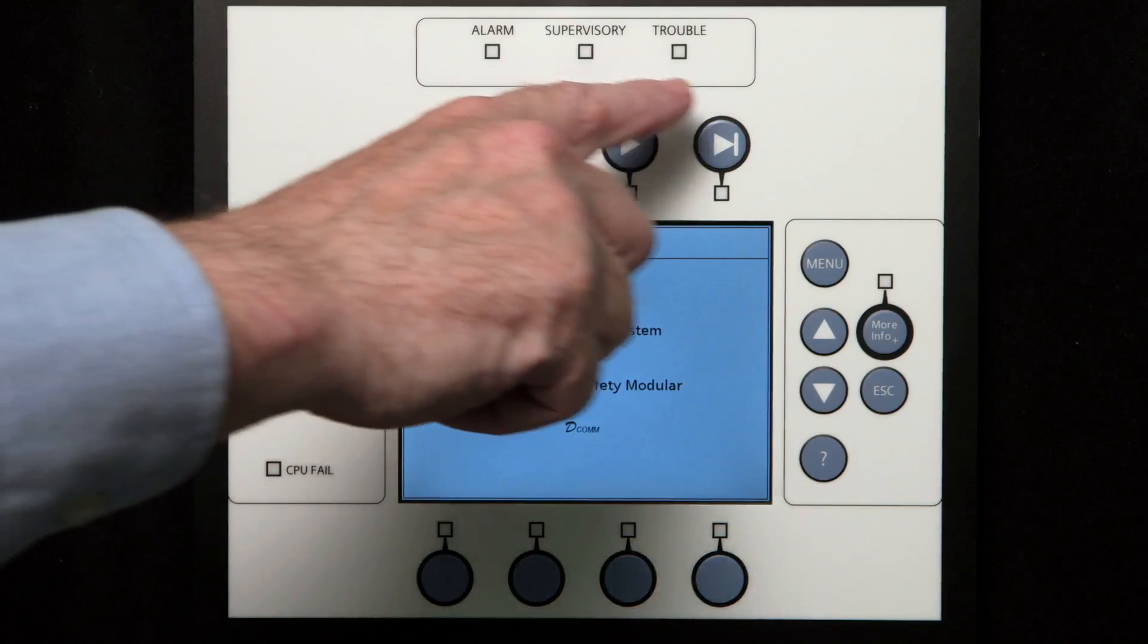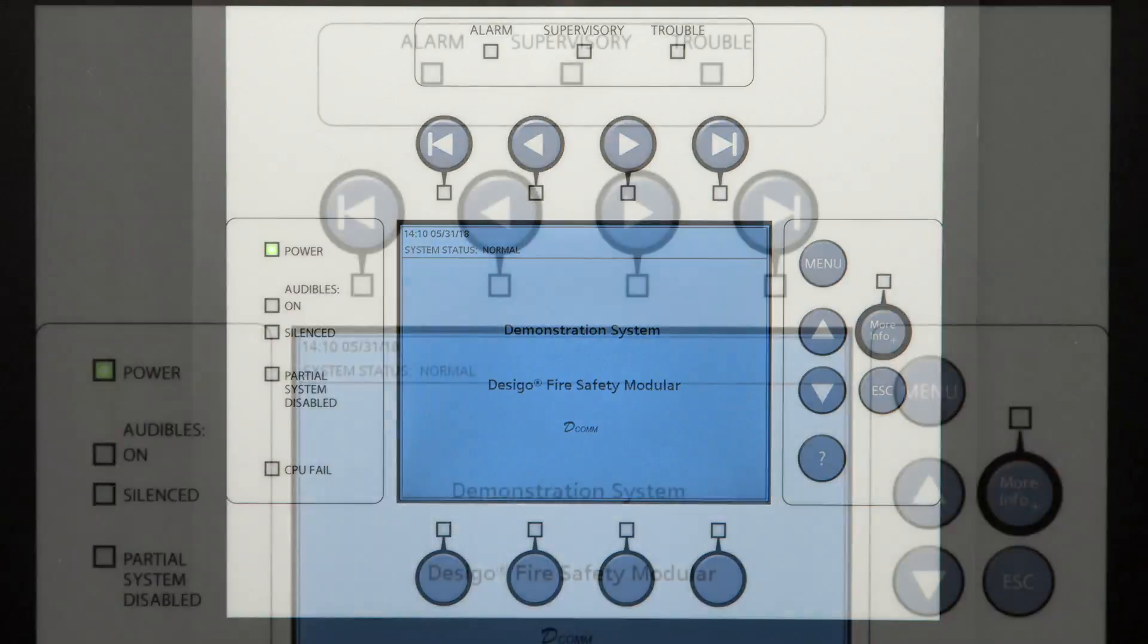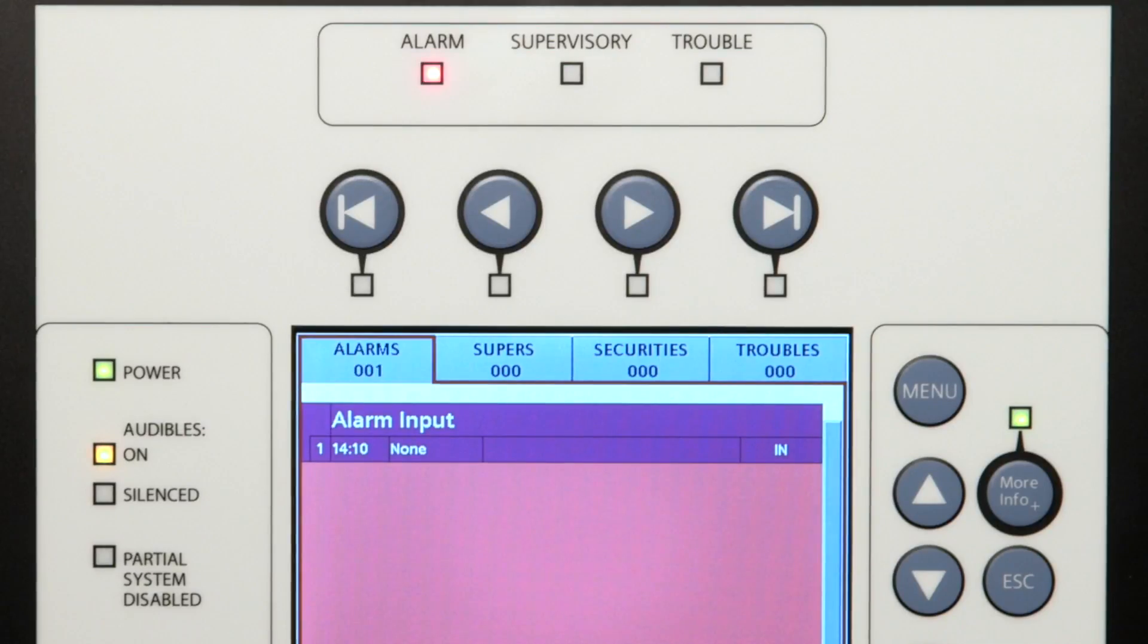On the top center of the operator unit are the event notification lamps or LEDs. Whenever there is an event in the system, these LEDs will illuminate. For example, when an alarm occurs, the alarm LED will illuminate, so at a quick glance, the operator can see the state of the fire alarm system.